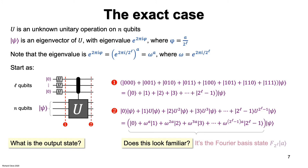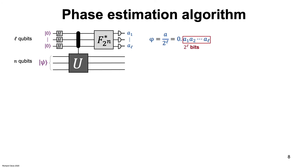That state is the Fourier basis state of F-2-to-the-l of ket-a. It's the same state that arises if we apply the Fourier transform to ket-a. Remember that our goal is to determine a. The fact that Fourier basis states with different a's are orthogonal is a good sign — they are distinguishable in principle. We can also explicitly compute the value of a using a polynomial number of gates, using the inverse Fourier transform. If we apply the inverse Fourier transform to the state F of ket-a, we get ket-a. So this is our phase estimation algorithm for the exact case.